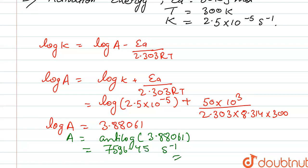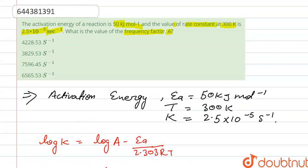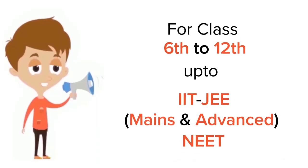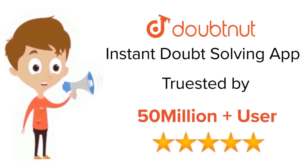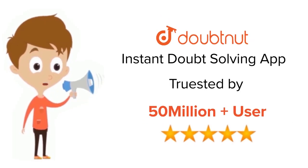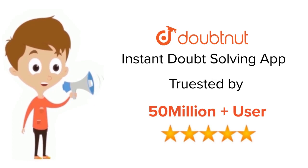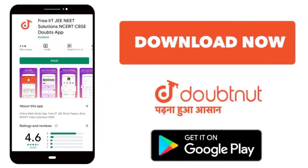This is the frequency factor, and it matches with our option C. For class 6 to 12, IIT JEE, and NEET level, trusted by more than 5 crore students — download the DoubtNet app today.